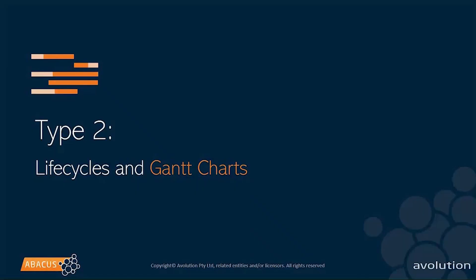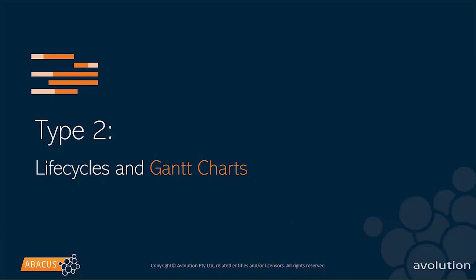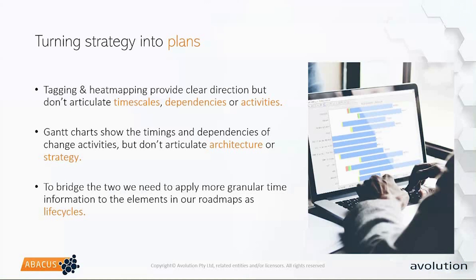So Type 1 roadmaps show us the what of the tagging and implementation approach. Now we actually want to start looking at the when. We already have clear direction in terms of what things we're going to be changing — and to understand the when in terms of time scales, there are traditional views like Gantt-style charts, which are perfectly fine for defining time scales, critical paths, and running projects. However, there is both a broader approach to defining actual strategy and a more granular approach to defining time itself in the form of lifecycles — which act almost as a bridge between the two. A no-code approach can be applied to those lifecycles as well.